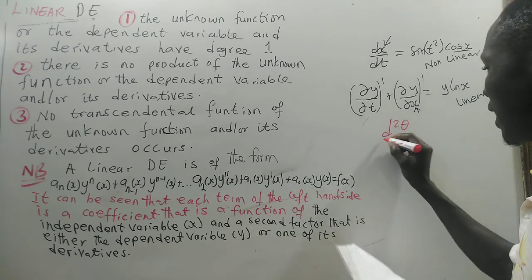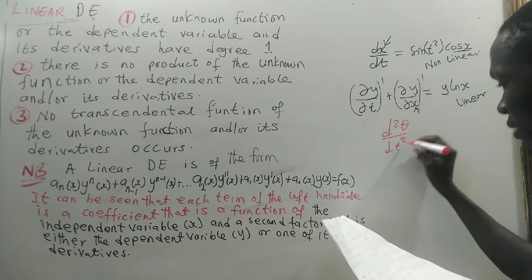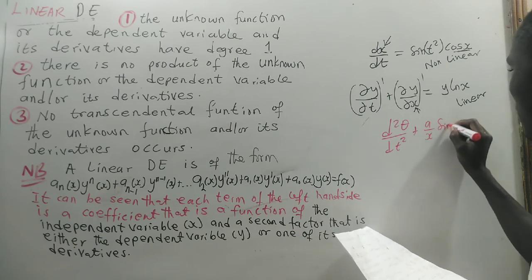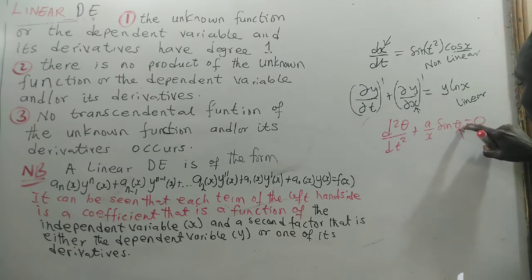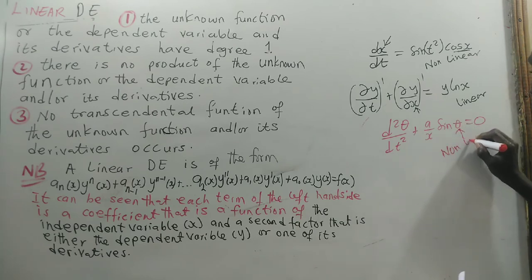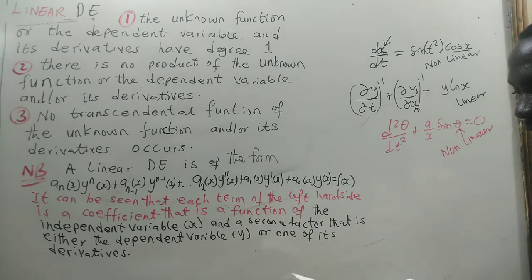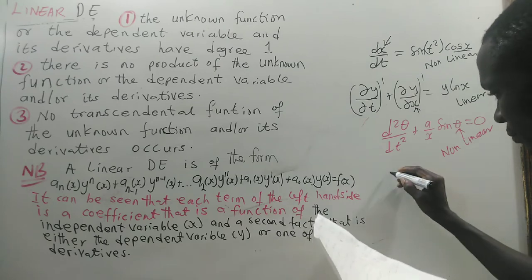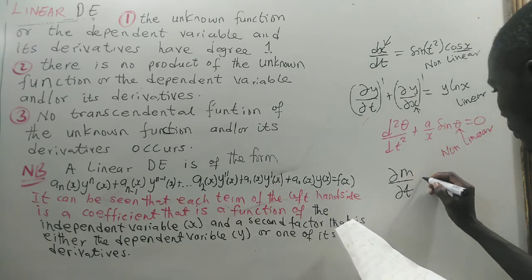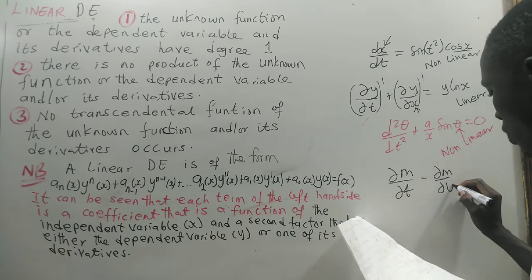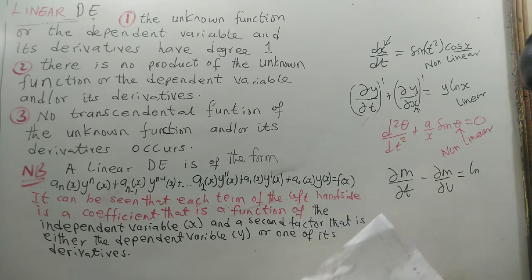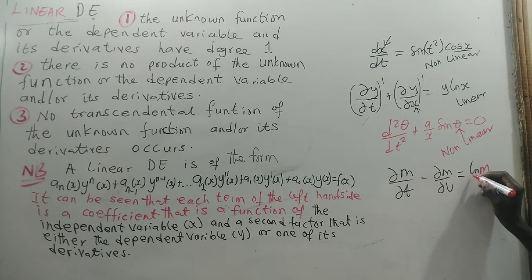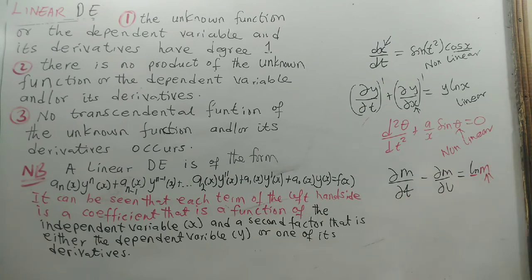Example 12: d²θ/dt² + (a/x)sin(θ) = 0. Clearly, sin is a transcendental function containing θ, which is the dependent variable. So, this is nonlinear. Example 13: ∂m/∂t - ∂m/∂u = ln(m). Here ln is a transcendental function containing m, the dependent variable. So, this is nonlinear.